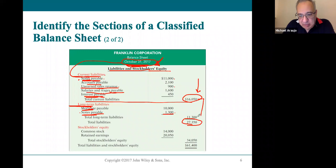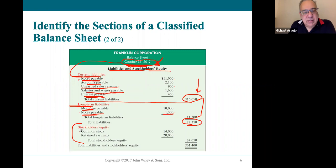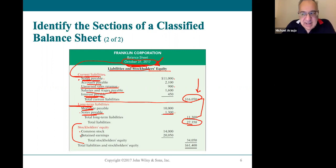Total liabilities includes current liabilities and long-term liabilities added together. Stockholders' equity looks the same as before. Common stock is always listed first — a corporation is born with investors and owners, so common stock representing common ownership comes first. Retained earnings is always listed second because it takes a company time to generate profit. Common stock happened first; retained earnings comes after the company has been in existence for a while.